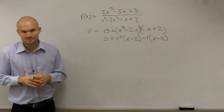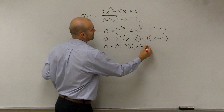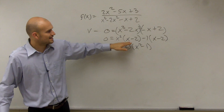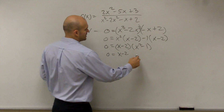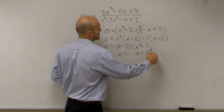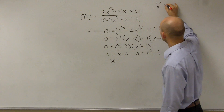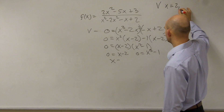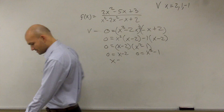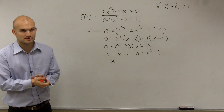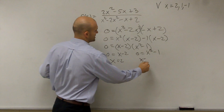Then we have 0 equals x minus 2, and I factor that out to get x squared minus 1. Using the zero product property, 0 equals x minus 2 and 0 equals x squared minus 1. So my vertical asymptotes are x equals positive 2, and solving x squared minus 1 equals 0 — adding 1 and taking the square root — x equals plus or minus 1.